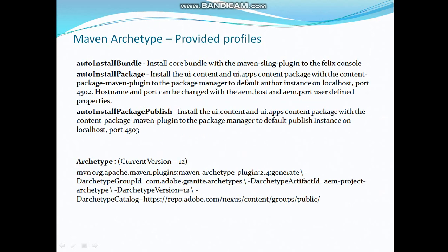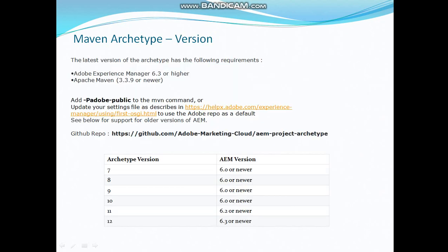This is my archetype for the AEM project. You can download it from GitHub — I have provided the path where you can get this archetype and information about previous versions. The latest version of the AEM archetype is 12, which is used to create projects for AEM 6.3 or newer versions. If you are on AEM 6.0, you should use archetype version 10; if on 6.2, you can use version 11, 10, or 9.